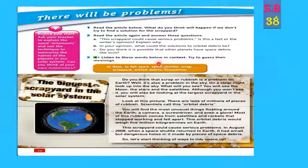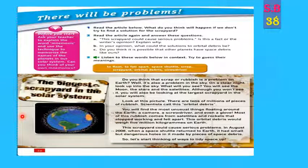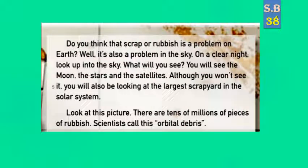Question number three: listen to these words below in context and try to guess their meanings — اقرأ هذه الكلمات وحاول أن تخمن معانيهم. Now let's move to read it. Do you think that scrap or rubbish is a problem on Earth? So why did the writer ask a question like this? Of course, scrap and rubbish is a big problem on Earth.